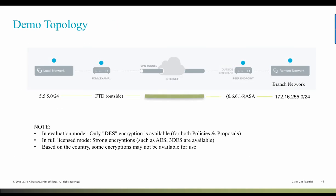Here is the demo topology we're going to use today to configure Site-to-Site VPN. On the local network I have an FTD, or Firepower Threat Defense. On the remote side I have an ASA. We're going to create a VPN tunnel between the FTD and the ASA. In evaluation mode, only basic encryption is available for both policies and proposals. However, in fully licensed mode, stronger encryptions are available. In my scenario I am using a fully licensed mode. Also, based on country, some encryptions may not be available depending on your licensing.